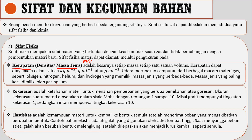Nanti kalian akan menerapkan ini di ujian praktek selanjutnya. Di sini kerapatan bisa diukur — dia masuk ke dalam sifat fisika suatu benda. Selanjutnya ada kekerasan: menyatakan ketahanan materi untuk menahan beban berupa tekanan atau goresan. Kekerasan juga bisa kalian ukur dalam skala MOHS, biasanya diukur dengan skala 1–10. Kemudian ada elastisitas.